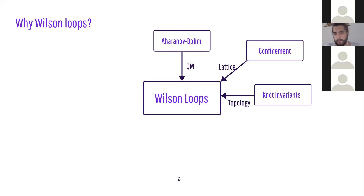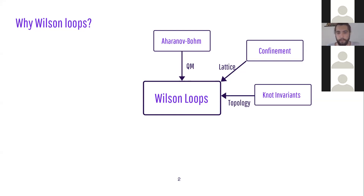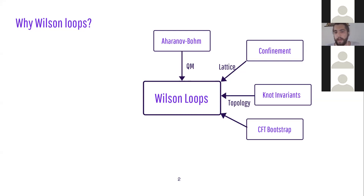Wilson loops also have a mathematical aspect highly explored by Witten, who relates the evaluation of Wilson loops in Chern-Simons theory to knot invariants. This is a very nice work giving a precise definition of Jones polynomials in terms of three-dimensional field theory. They are also interesting in the CFT bootstrap context, where people have considered polygon Wilson loops and taken various limits to extract exact correlation functions.